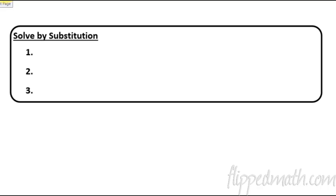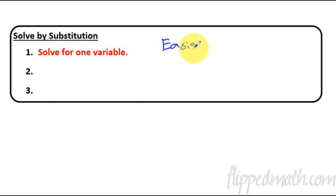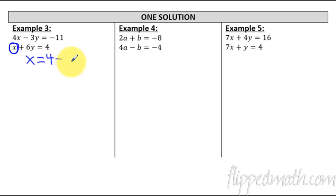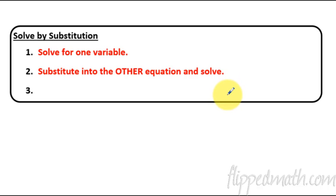Here are the steps to solving by substitution. Step one: solve for one variable — and not just any variable, but the easiest one. You could solve for any of them, but choose the easiest. In Example 3, looking at the variables x and y, the easiest to isolate is the x in the first equation. Subtracting 6y from both sides gives: x equals 4 minus 6y.